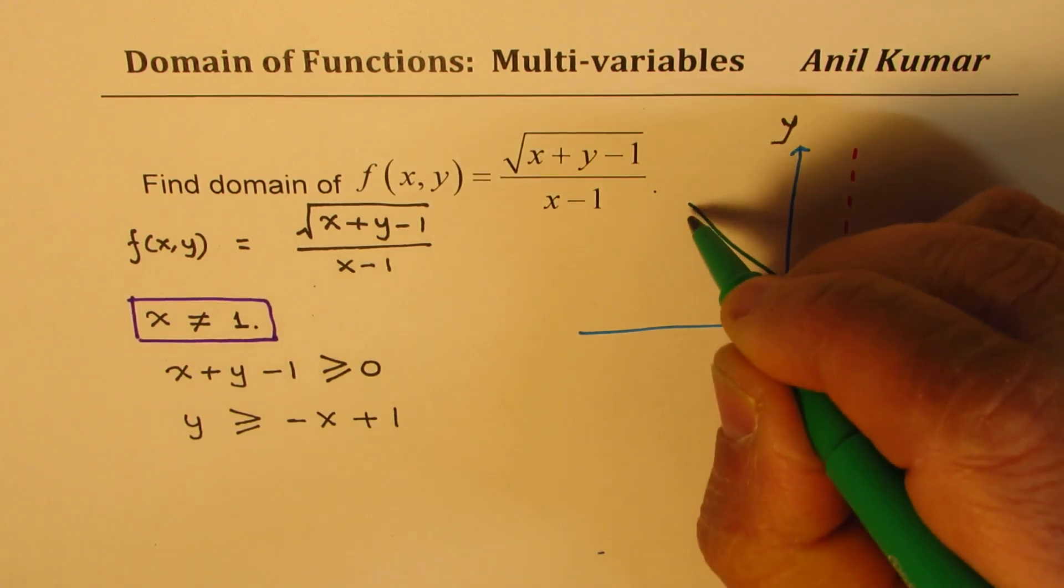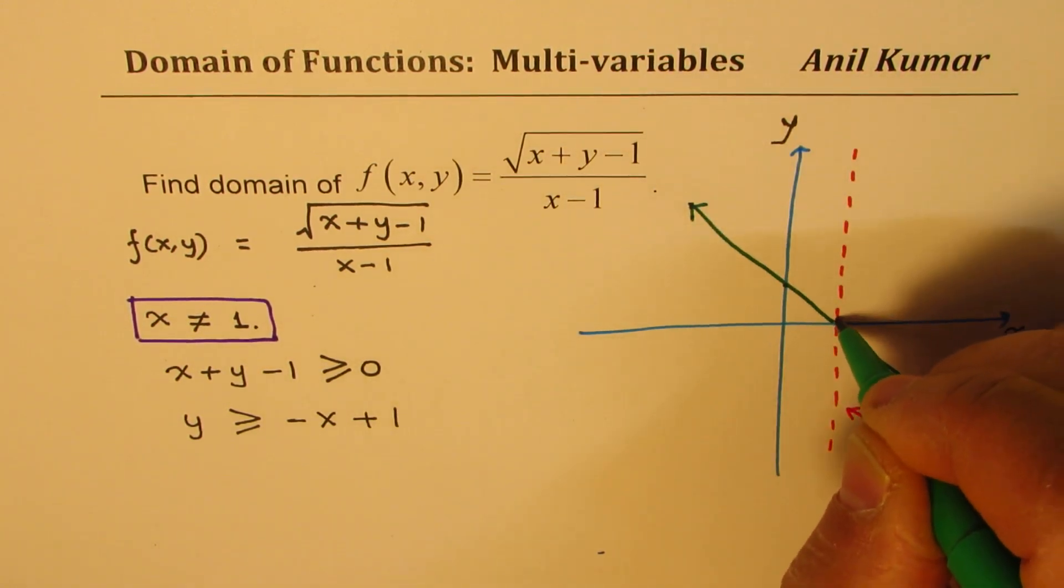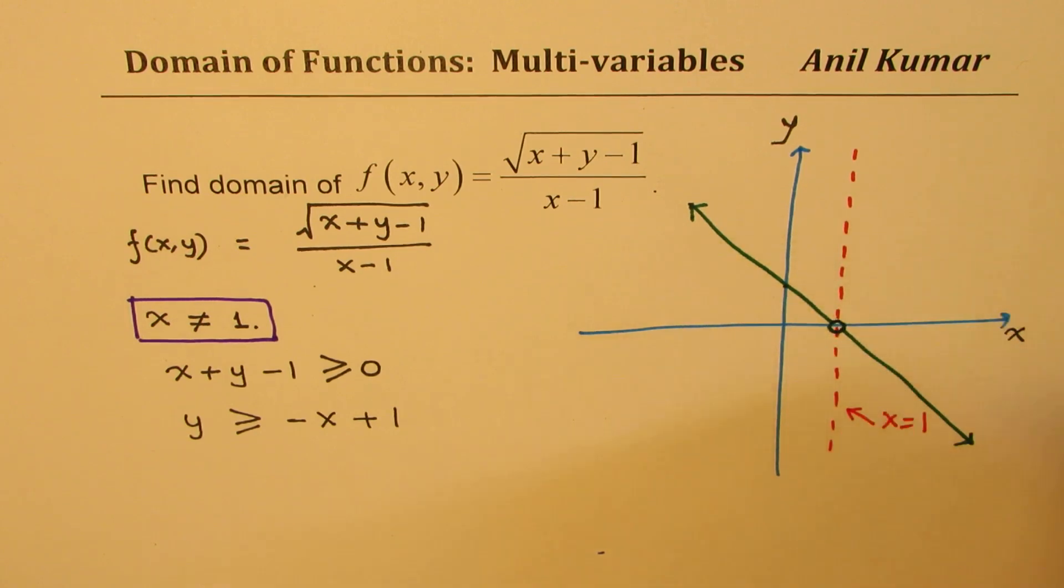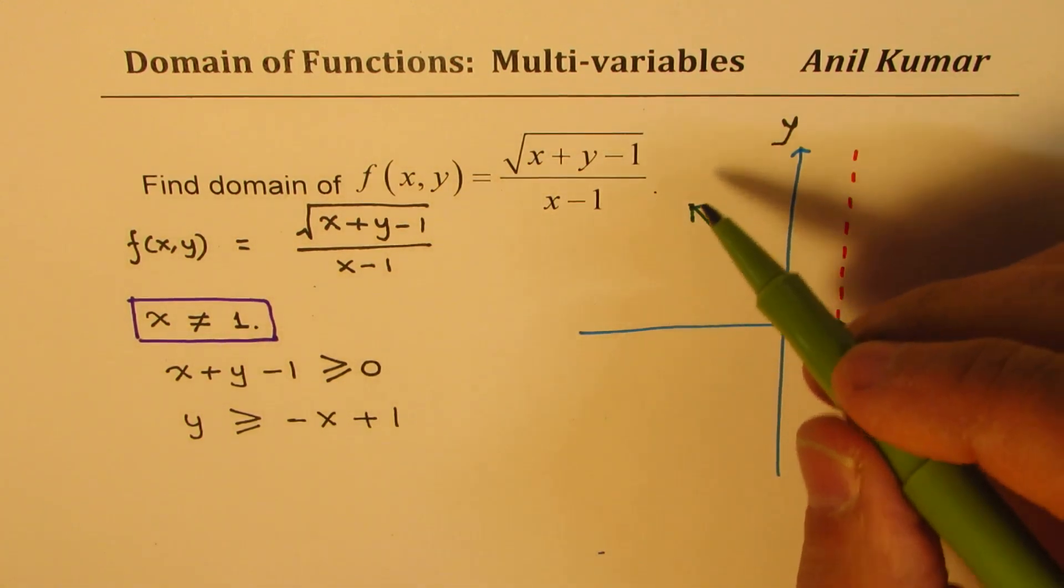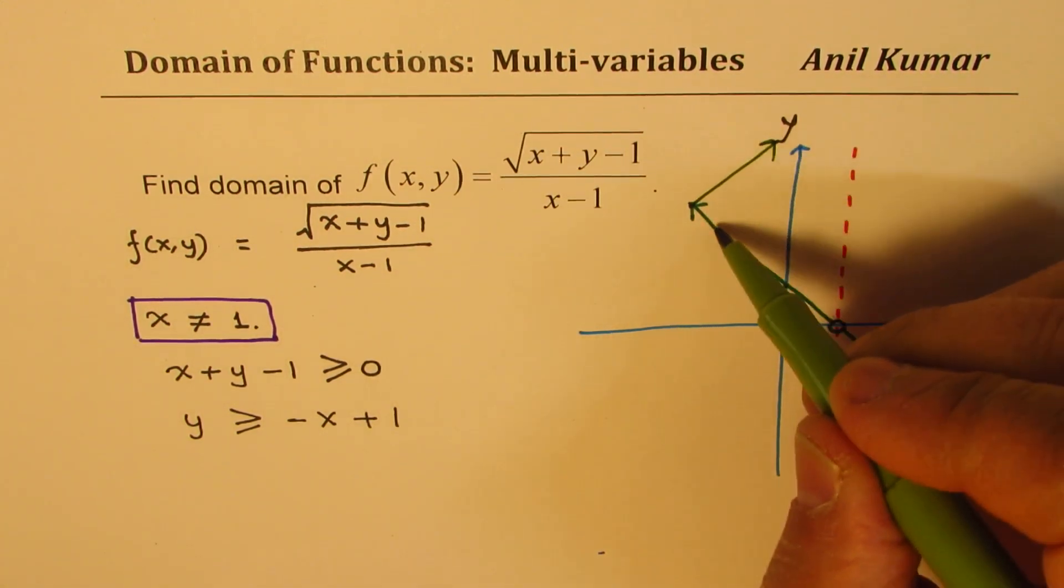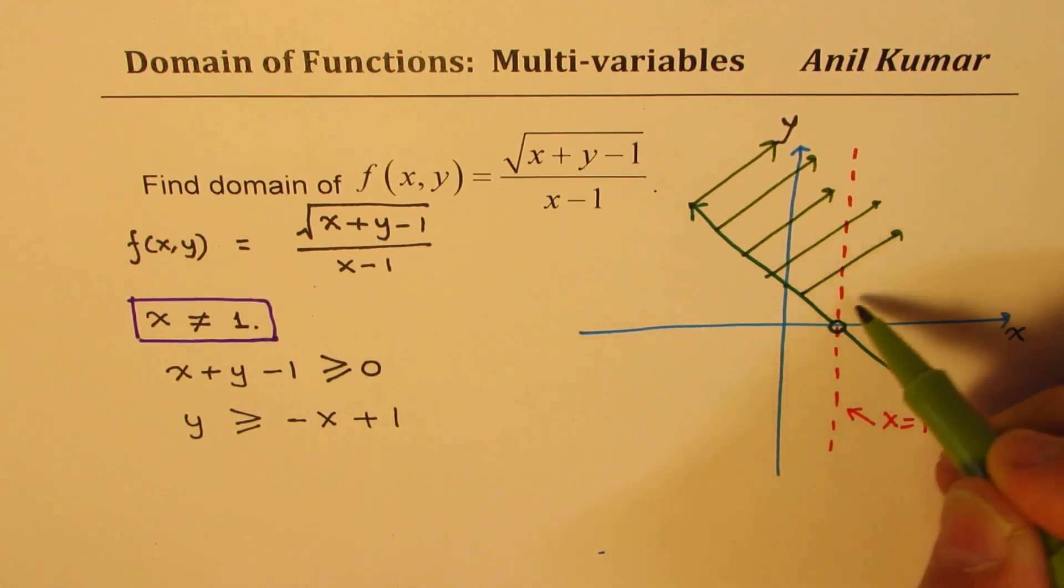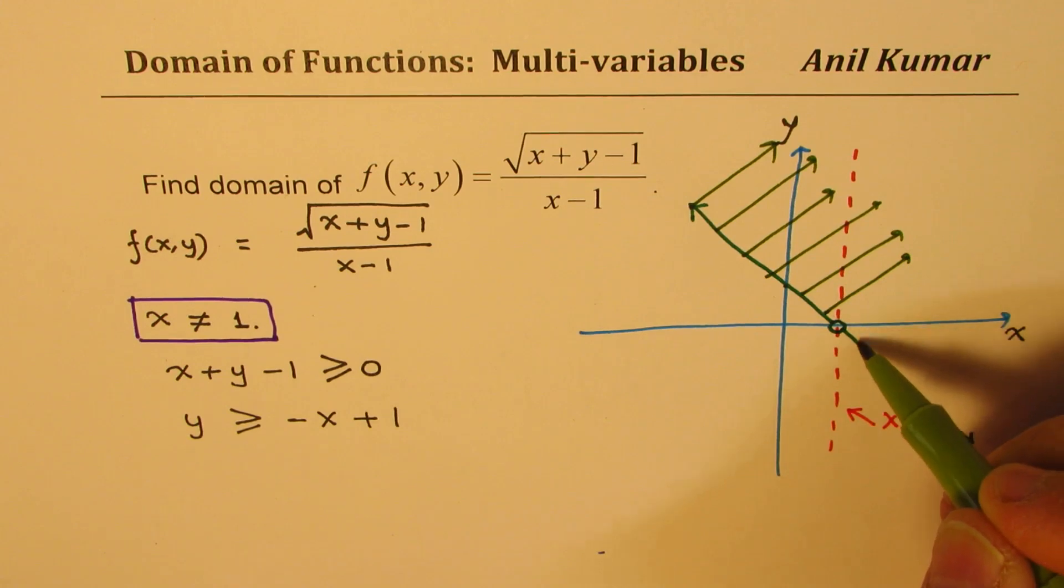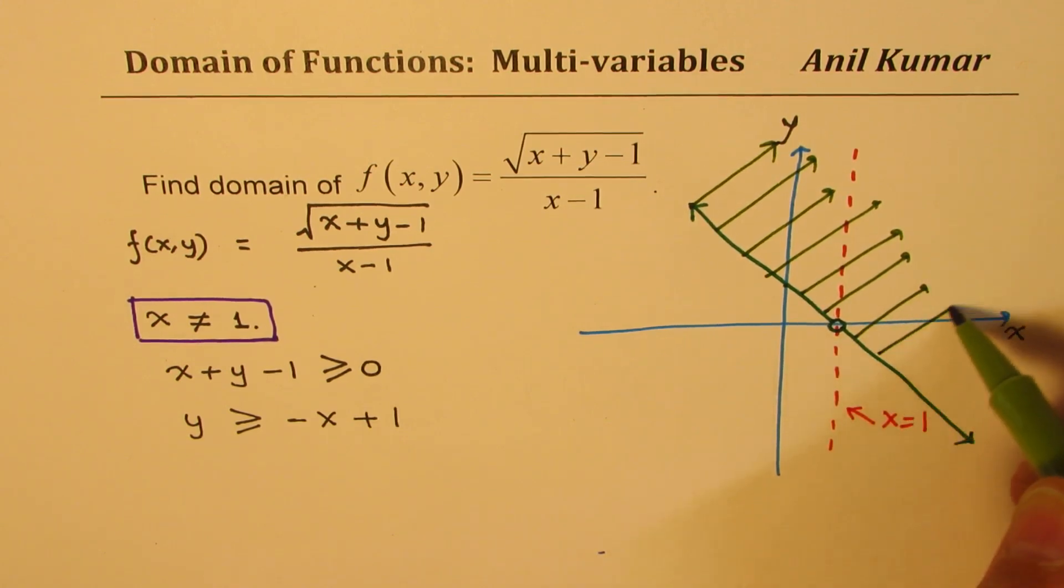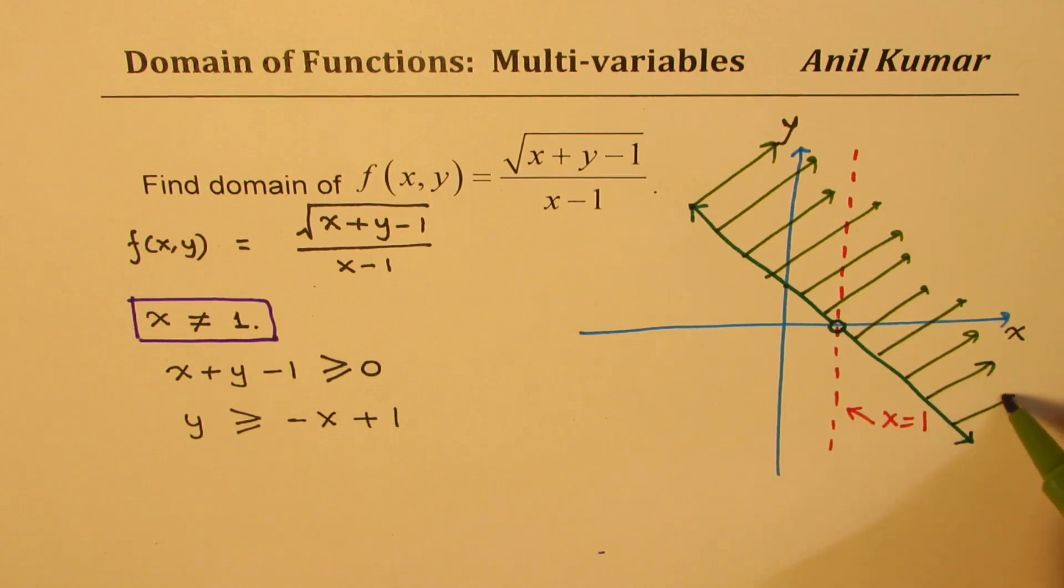So that becomes our line, where clearly we cannot have this point. So I'm drawing a hole here. Now, when I say that y is greater than or equal to this value, that means we are looking into all the values on the upper side of this particular line, where the value of x is not equal to 1. So that becomes the domain, which is shown in this particular diagram.